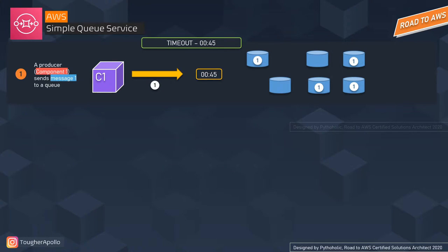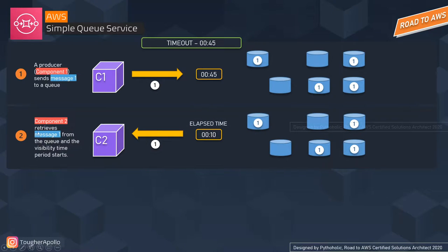Now let's talk about the lifecycle of a message from start to end — from creation to deletion in AWS SQS. In the first step, the producer (component one) pushes message one to the queue and the visibility timeout clock is set to 45 seconds. These messages are then spread across the distributed SQS queues redundantly.